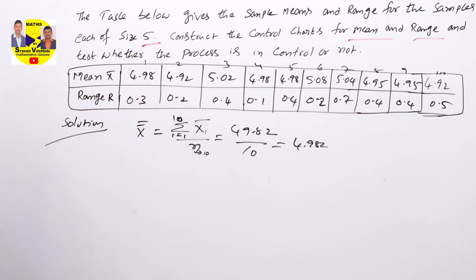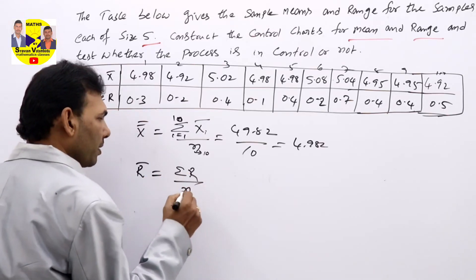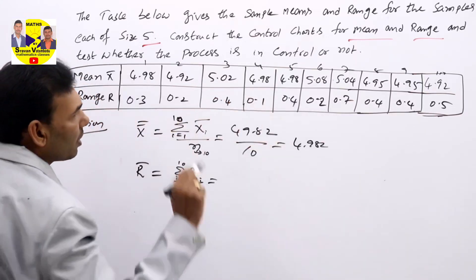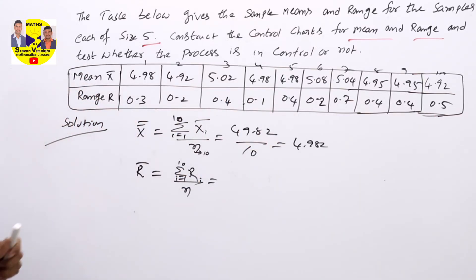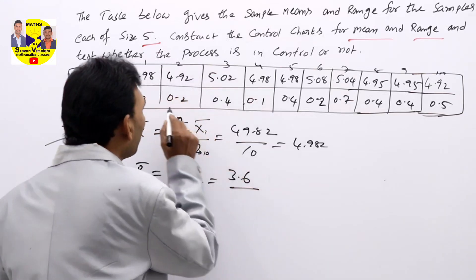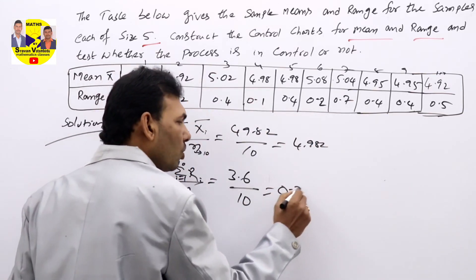Next, what is R bar? R bar means sigma R by n, i equal to 1 to 10 Ri. That means all the R values you need to add—add all the 10 values. What you get? 3.6. If you divide these second row values by 10, you get 0.36.